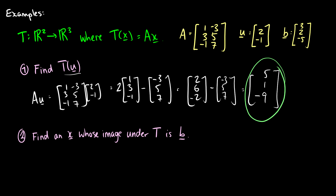We can take any vector as input. This function takes in a vector from R2 and spits out a vector in R3 — two entries in, three entries out. Now I want to find a vector x whose image under T is b. That means I want to find x such that T(x) produces b.